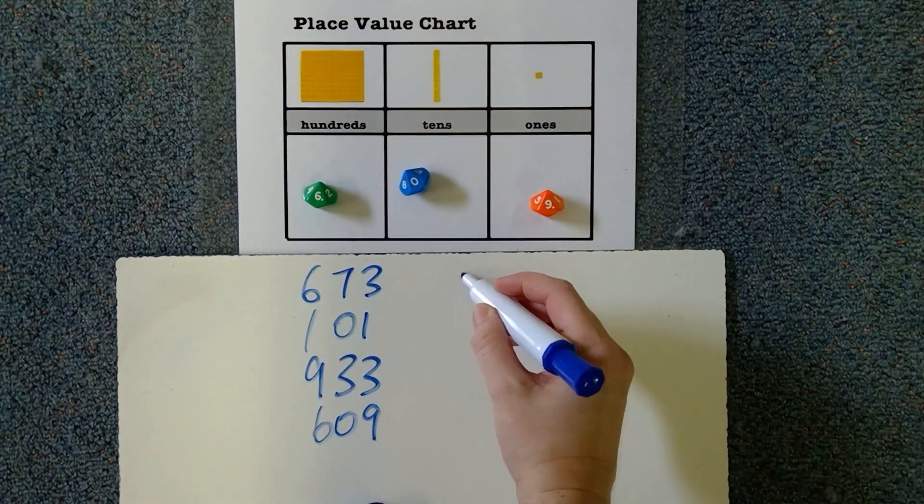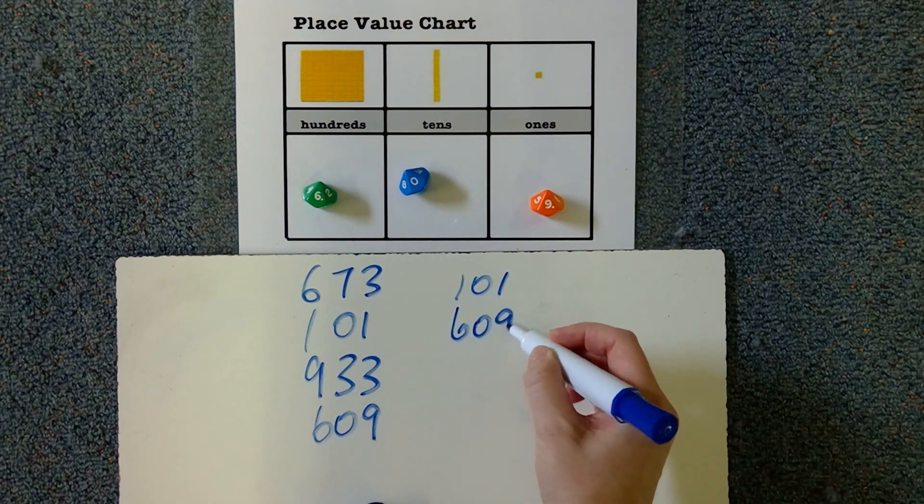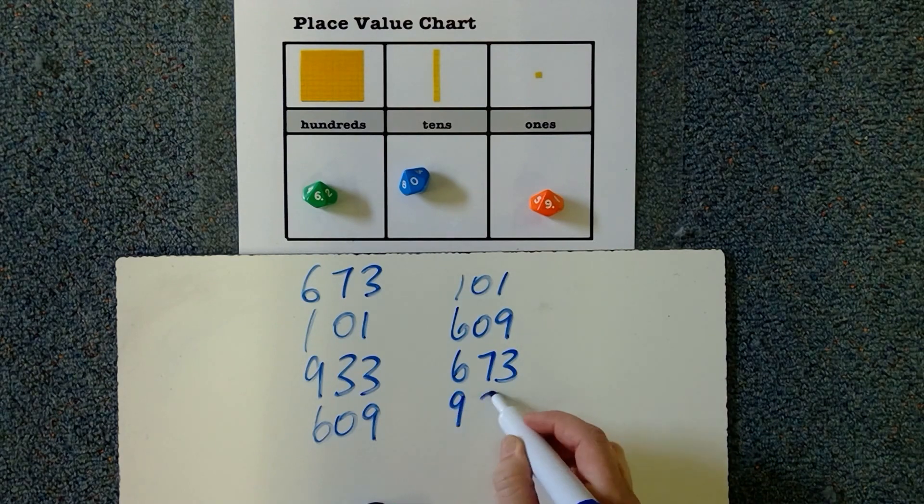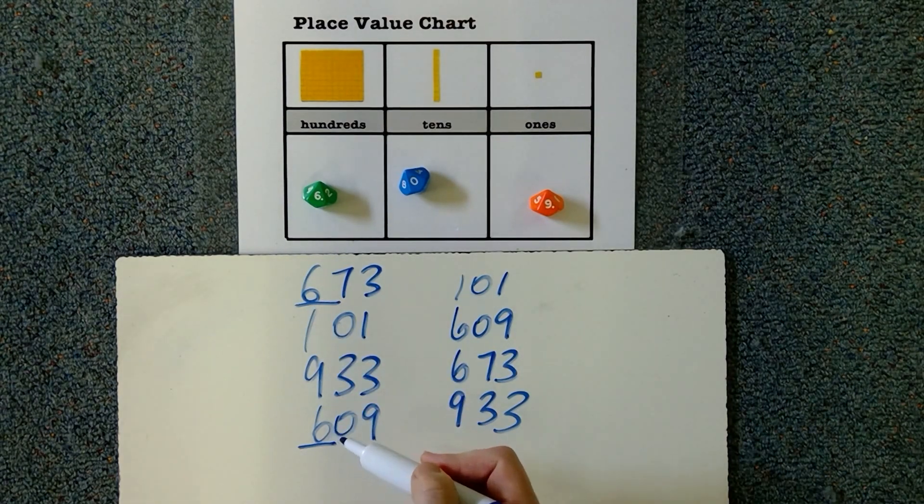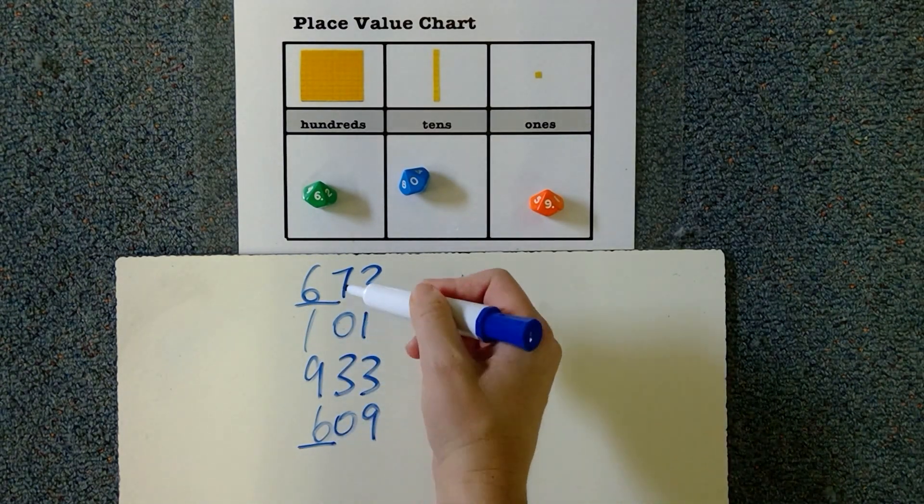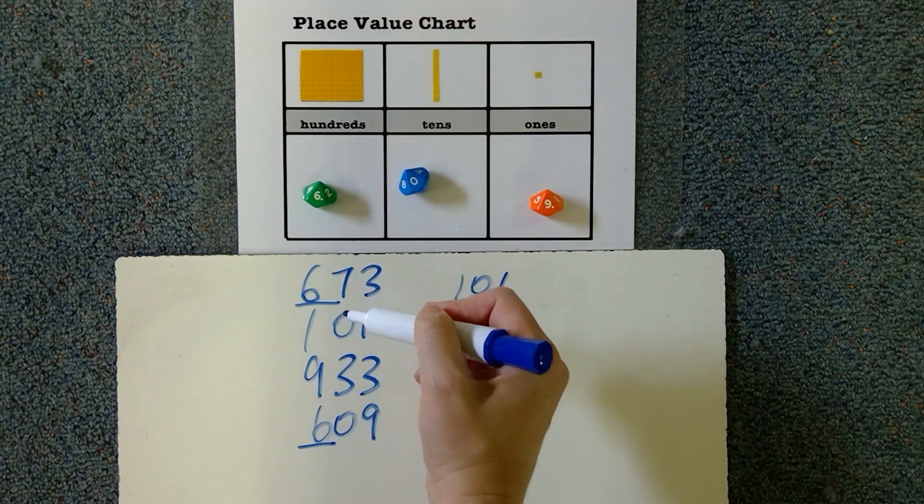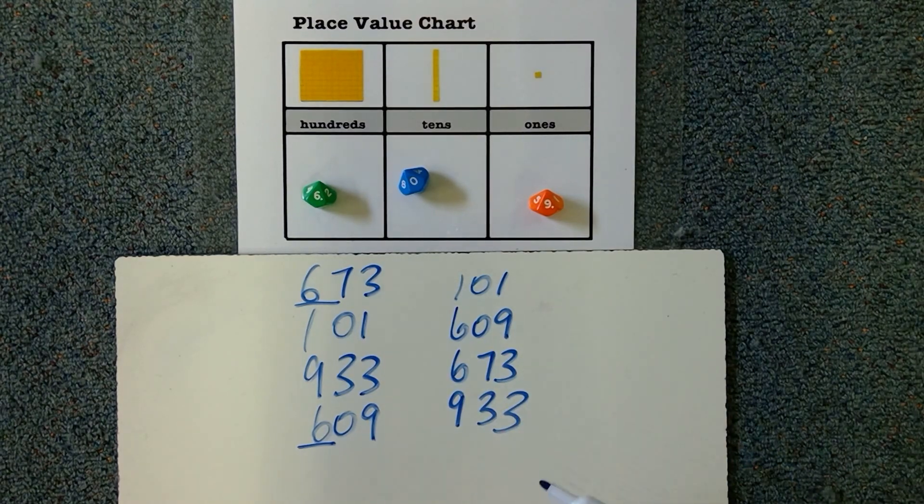Okay, here's your answers. You should have had 101, 609, 673, 933. You would have found this one maybe a little bit trickier because we had two hundreds values that were 600, which means you need to then go to your tens values and I can see that I've got a zero in this digit and I've got a seven in this digit. Seventy is worth more than zero so that would have gone first. Well done.